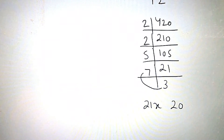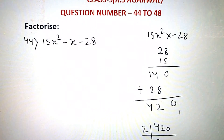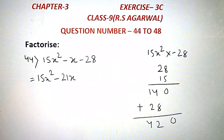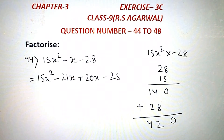Now if we apply minus, then minus x is the same. Then multiply to get 420x square. We write: 15x square minus 21x plus 20x minus 28.